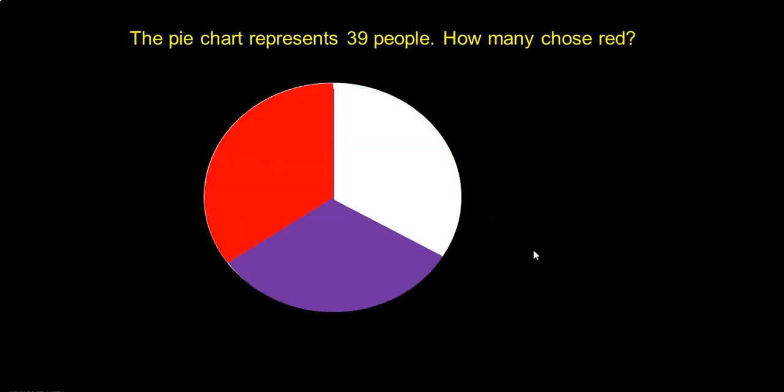This pie chart represents 39 people. How many chose red? If you look at the different sectors of this pie chart it has been divided into three equal parts. Each part represents one third of the circle. So red is one third of 39. So one third of 39 gives you 13.